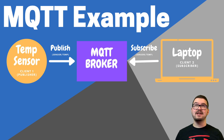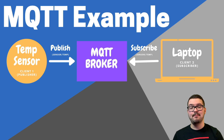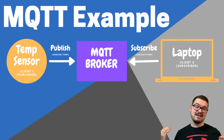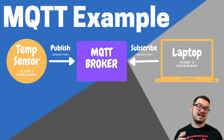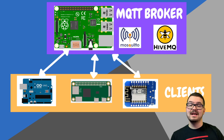On the other side, client two is the laptop. It's a subscriber and it's subscribed to the topic sensor/temp. Client one has published its message with that topic, client two has subscribed to a message with that topic. The message is now in the broker, and the broker looks at the message, sees the topic, and asks: does anyone want this message with topic sensor/temp? It then looks at all its subscribers, and anyone subscribed to that topic will receive that message.